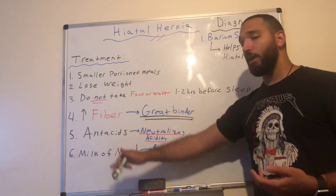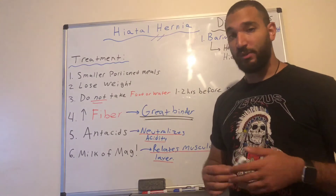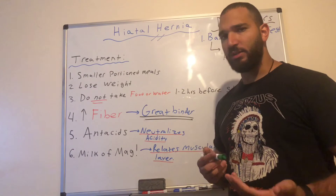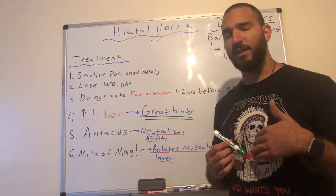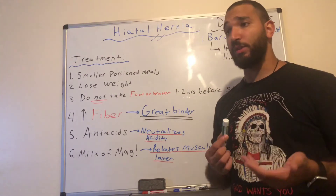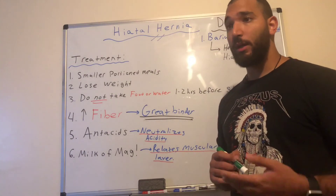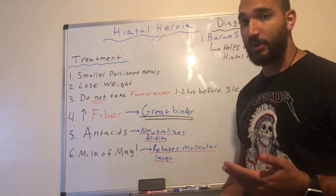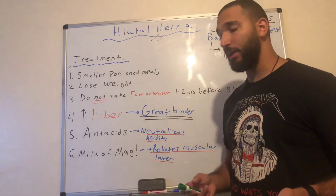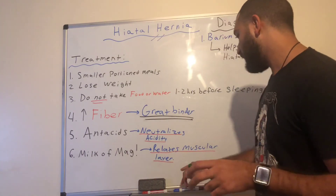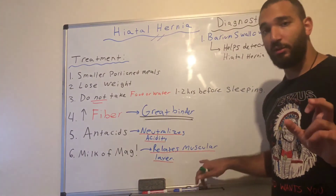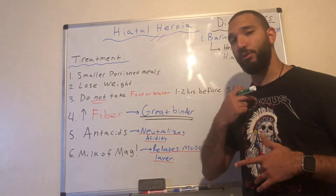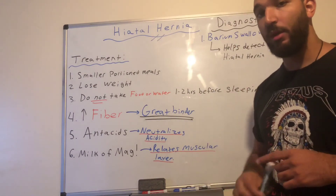A patient should take antacids such as Tums, which will neutralize the acidity. A contraindication of taking too much Tums is that it can increase calcium carbonate levels and lead to issues such as kidney stones. Also, milk of magnesia is a medication that coats the stomach and relaxes the muscular layers so acidity is not pushed up to the esophagus, reducing heartburn.